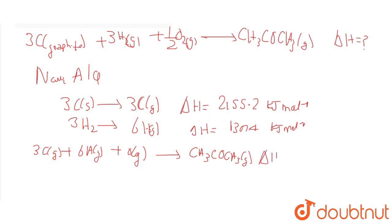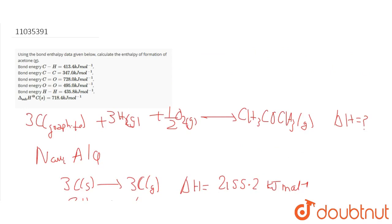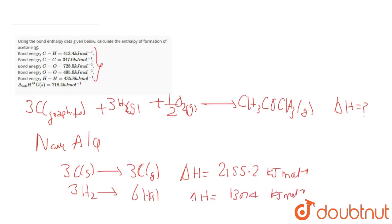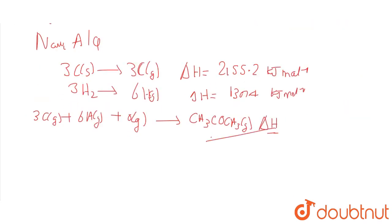For this delta H, we can use bond energies. The product side bond energy is given in the question. Delta H equals minus the bond energies on the product side.